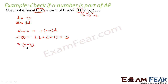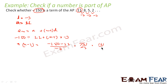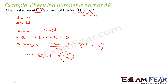n minus 1 equals (minus 150 minus 11) by minus 3, which is minus 161 by minus 3, and the negatives cancel to give 161 by 3. So n equals 161 by 3 plus 1, that is 164 by 3. This is a fractional value because 164 is not divisible by 3.